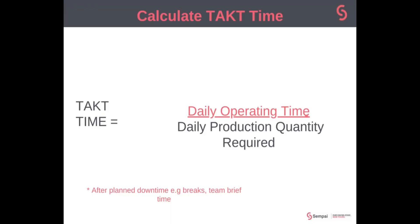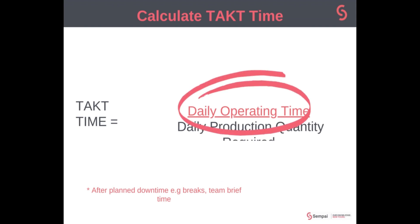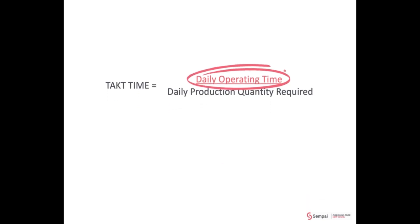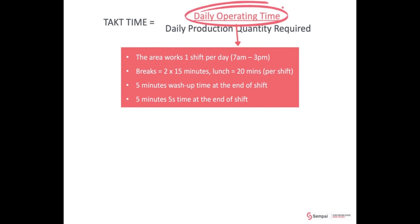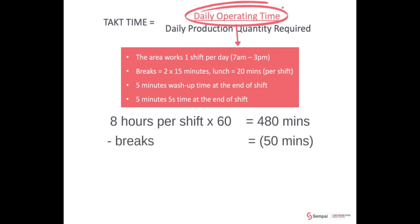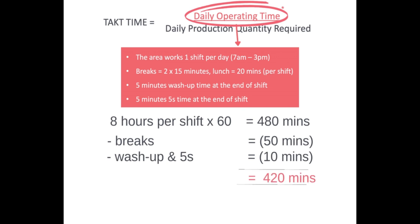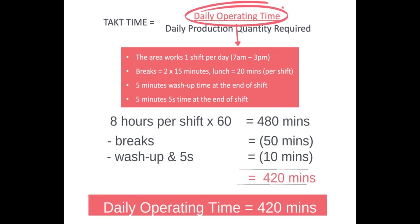So let's go back to our calculation. You can see we've circled daily operating time here — that's the bit we'll calculate. The first four points on our information for the factory are what we need here. Eight hours per shift times 60 minutes is 480 minutes. Take off our breaks — that's 50 minutes off — then another 10 minutes off for wash up and 5S, giving us a net daily operating time of 420 minutes.